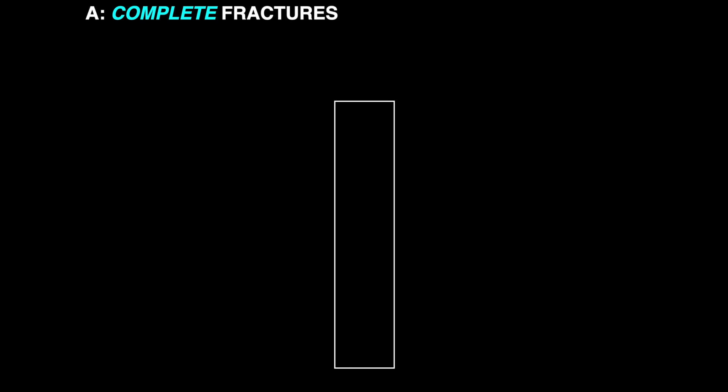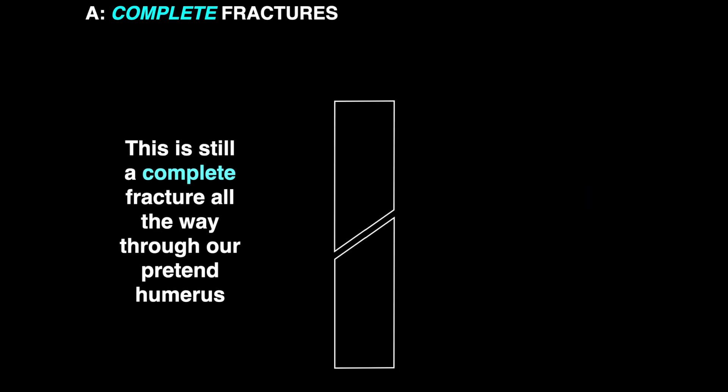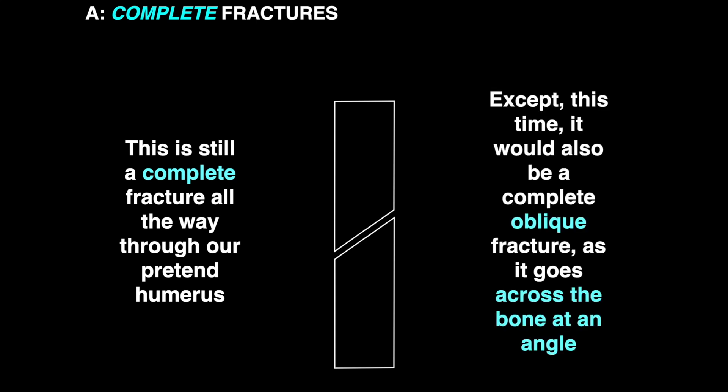So now we're going to talk about a new type of fracture. Pretend this is the humerus. Some kind of accident happens. It causes a fracture. But this looks a little different. And that's because this is still a complete fracture through the humerus, but it's called an oblique fracture because it goes across the bone at an angle.